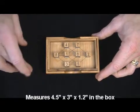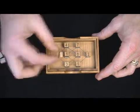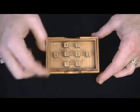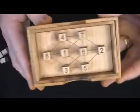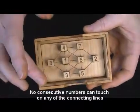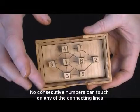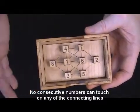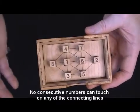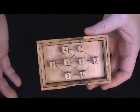Your goal here is to arrange these pegs such that no sequential number is connected via any of these lines that you see here. That is, a 3 could not be adjacent to a 4 or a 2, a 6 could not be adjacent to a 7 or 5, and so forth.